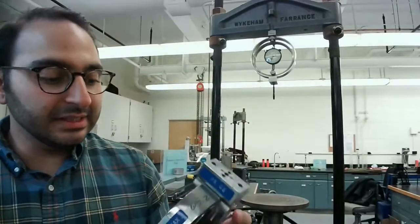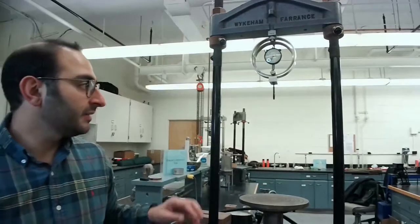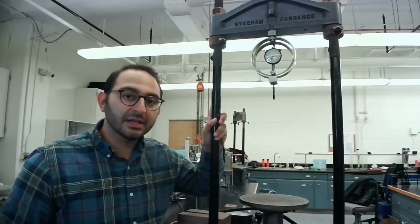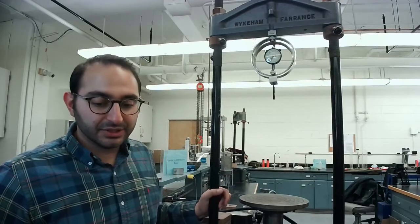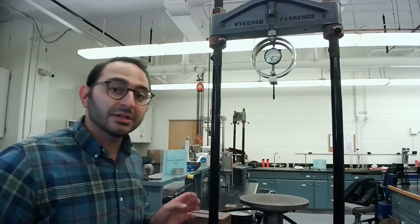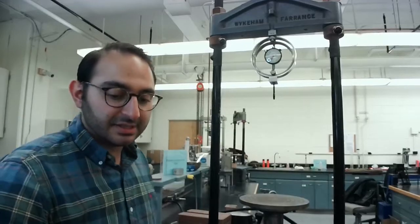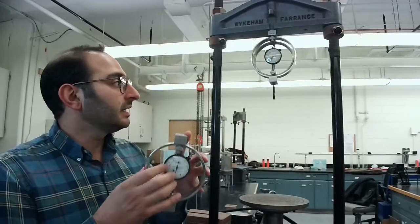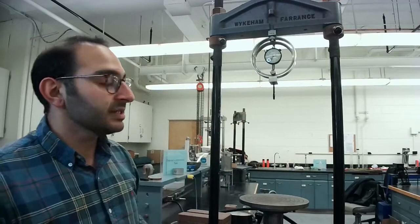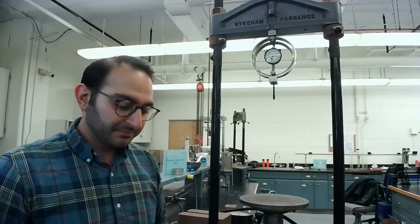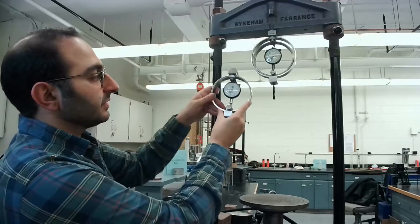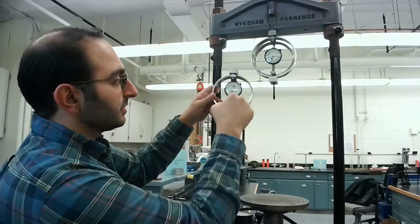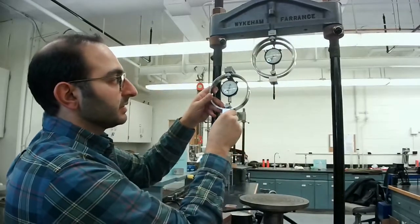So what we want to do is calibrate two load rings today: one for our triaxial machine that you'll be testing in one of the experiments, and another load ring for the direct shear device. These look the same, although if you look carefully, this one only has one ring, this one has two rings around it.